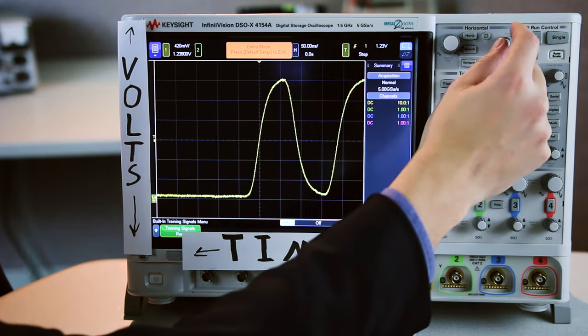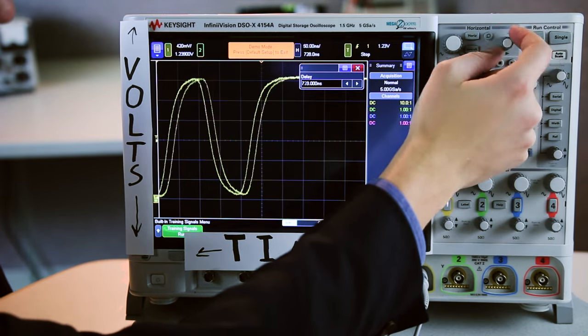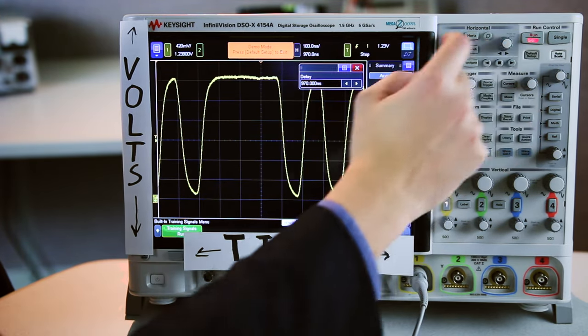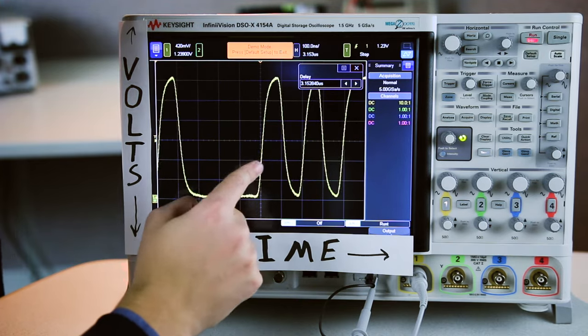We can use this other knob up in the horizontal section and we can actually scroll through our waveform. And if you're extra lucky and your scope has a touchscreen, you can actually just use the touchscreen to swipe through and look at your whole signal all the time.